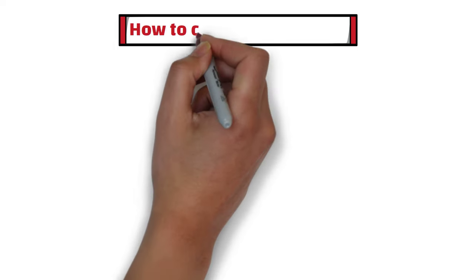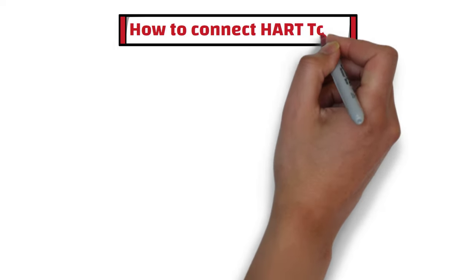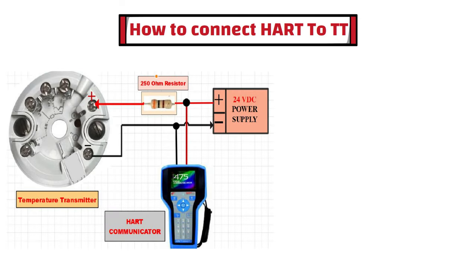First of all, let's learn how to connect the HART Communicator to the temperature transmitter. Connect a 24-volt DC power supply to the temperature transmitter, and also connect a 250-ohm resistor in series with the positive side of the power supply. Connect the HART Communicator between the temperature transmitter and the 24-volt DC power supply as shown in this diagram.